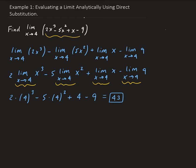So if we're letting this be our function, 2x cubed minus 5x squared plus x minus 9, what this is telling us, if we do a direct substitution and evaluate this function at 4, in this case we get 43.